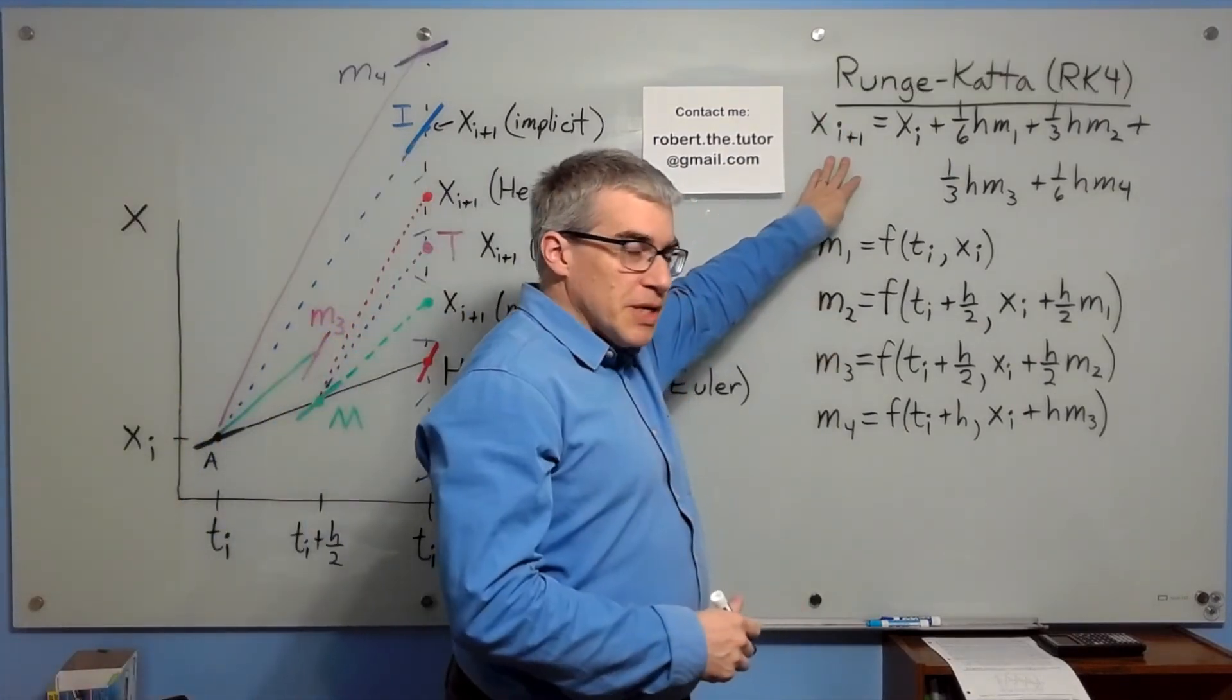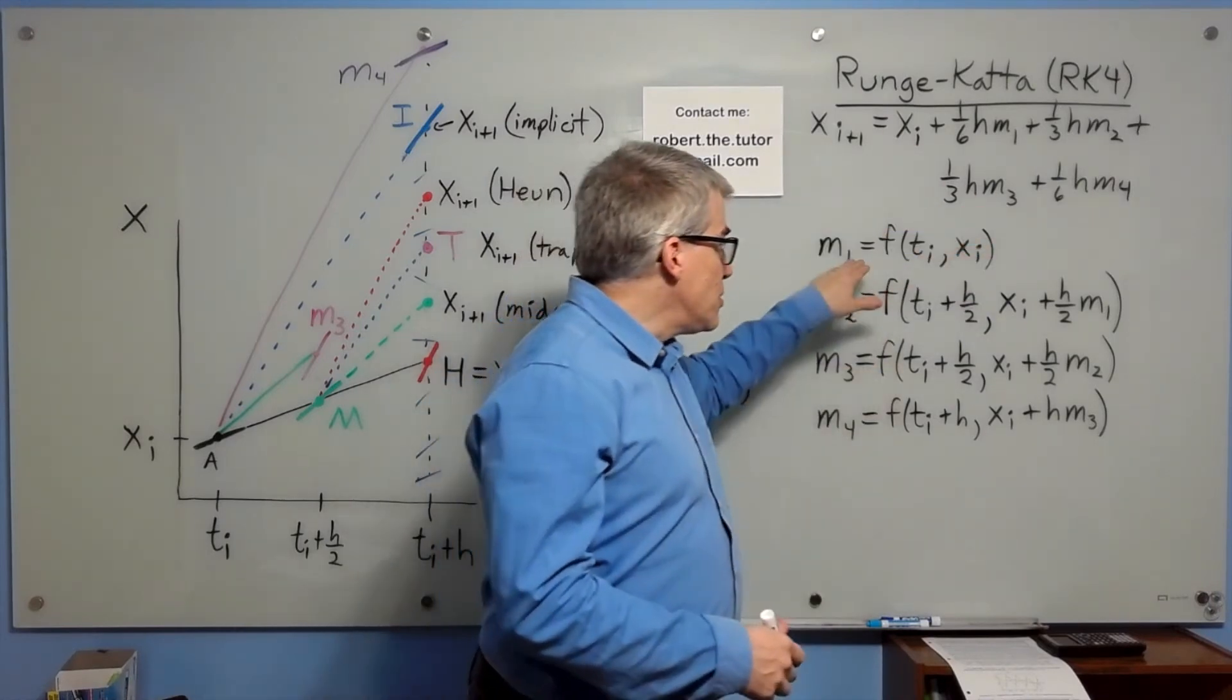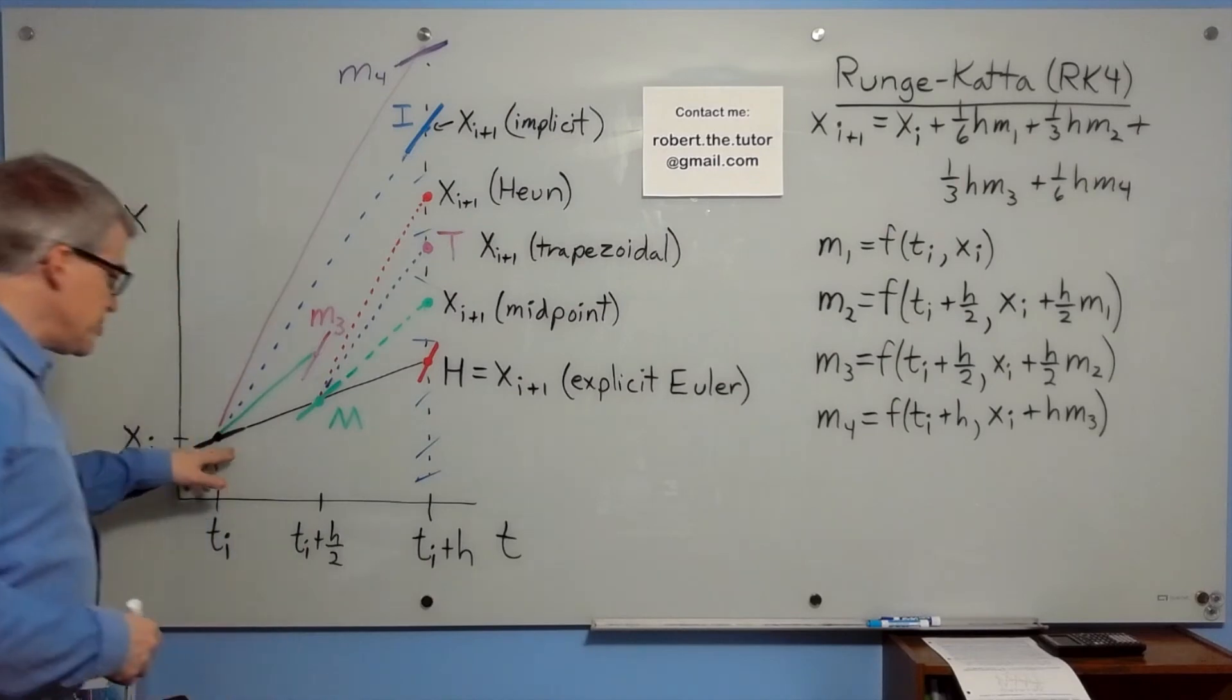Here's the formula. It uses four different slopes that are defined recursively. The first slope, m1, is just the slope at a.